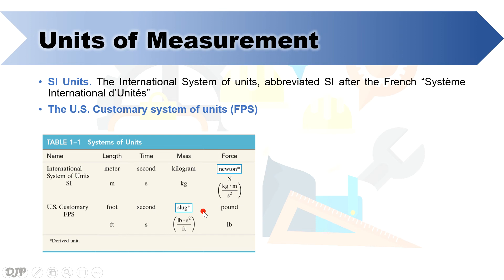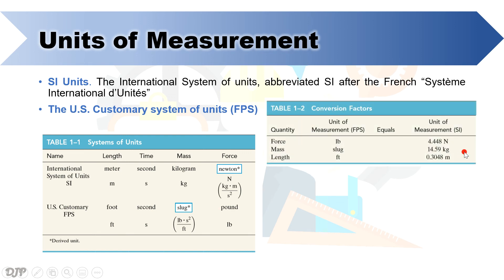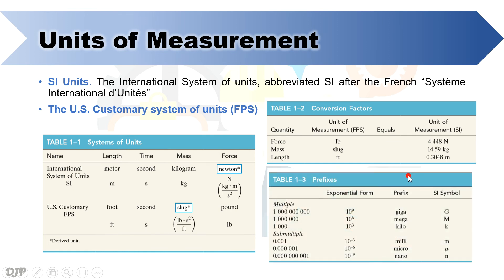To aid us in solving problems that necessitates shifting of system of units, you can also refer to this table, conversion factors. And lastly, you might encounter problems with prefixes such as, for example, kilonewton or millimeters. You may refer to this table as well and take note of the symbol. I recommend that before you proceed with the next topic, please review these three tables so that it will help lessen the burden of handling the units in our future problem solving.